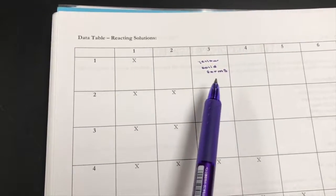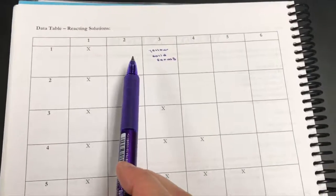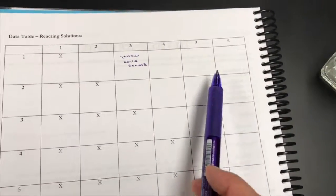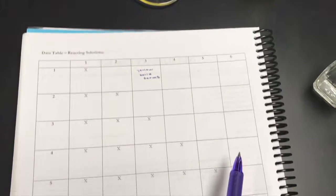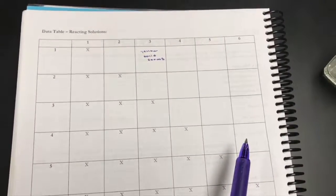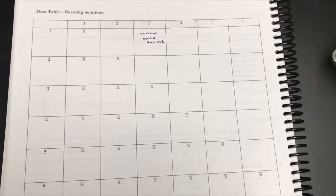Now you need to take all the other solutions and fill in these tables, and then based on this information and the information you got based on color, you'll be able to figure out the six unknown solutions.